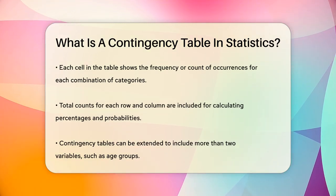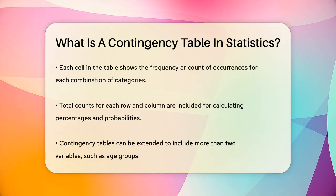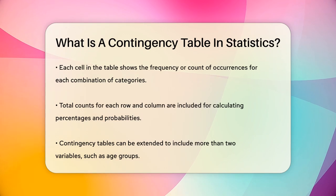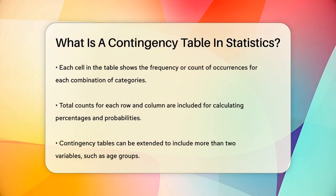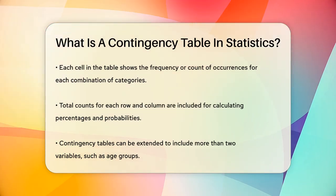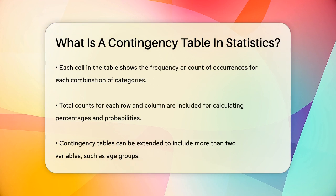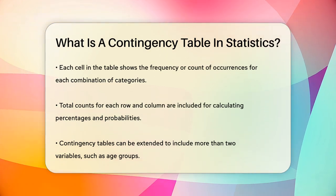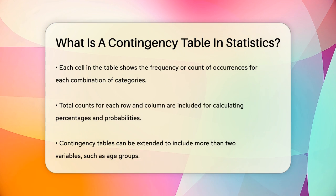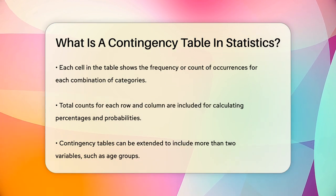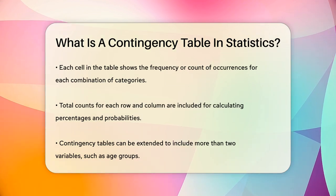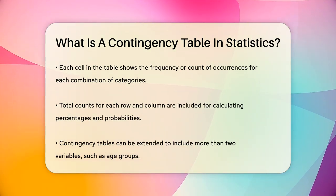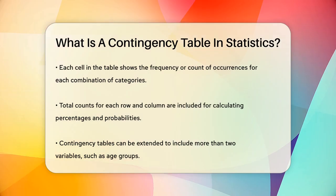Each cell in the table shows the frequency or count of how many people fall into each combination of categories. So you might see that 20 boys prefer chocolate ice cream, 15 girls prefer strawberry, and so on. The table also includes total counts for each row and column, which helps in calculating percentages and probabilities.